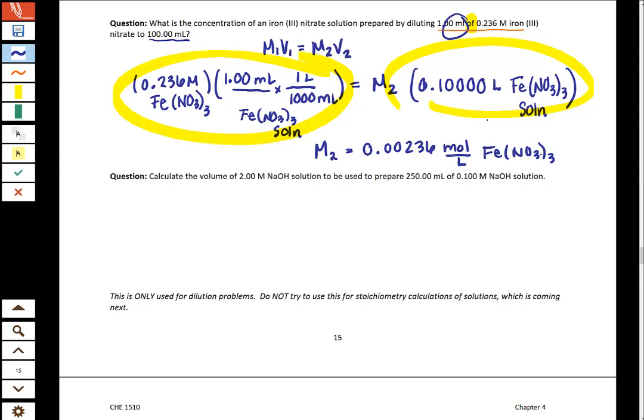Let's try another one. This one says, calculate the volume of a 2 molar NaOH solution to be used to prepare 250 milliliters of 0.1 molar NaOH solution. Okay. So for this one, again, we know that we are doing a dilution. The way that I know that I'm doing a dilution is when I look at the components, I'm starting with NaOH, I'm ending with NaOH. So no chemical reaction has happened. All that's happened is we've added water. So the other thing to watch out for is the word 'of'. So that 'of' is linking those two components together.